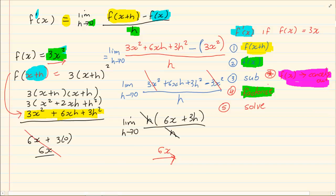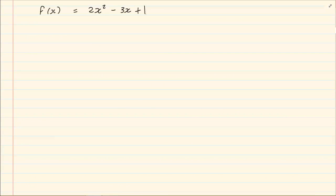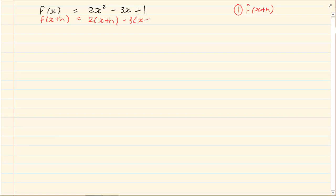Let us try a more challenging example. The method is the same but the working is longer. First we need f(x+h), so wherever x appears we substitute (x+h). After expanding we get 2(x² + 2xh + h²) − 3(x+h) + 1, which simplifies to 2x² + 4xh + 2h² − 3x − 3h + 1.